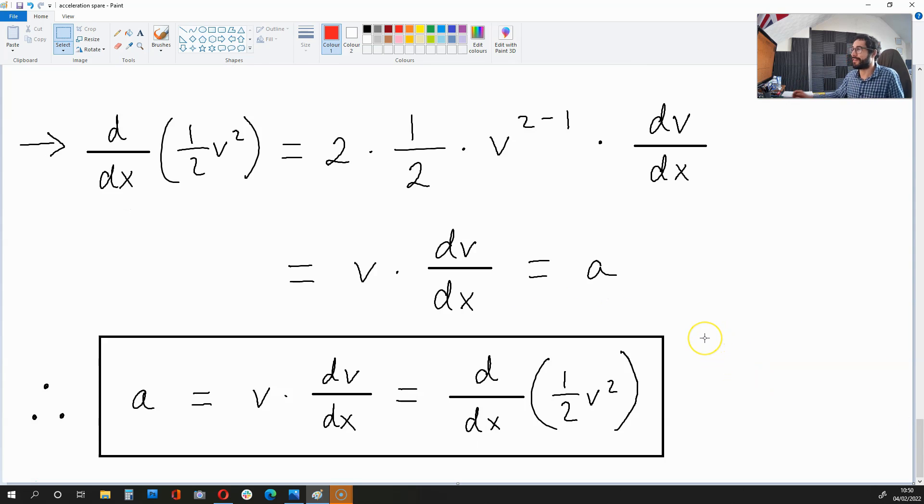And if this is true, then a, which is v times dv over dx, is also equal to d over dx, half v squared. And we have our complete proof.